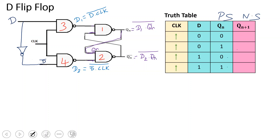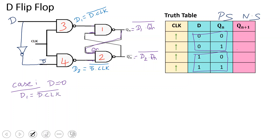Case 1: when D is equal to 0. D1 equals (D · clock) bar. Taking clock equal to 1, D1 = (0 · 1) bar = 0 bar = 1. So D1 is equal to 1.